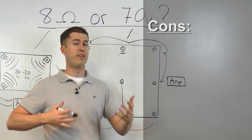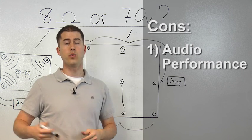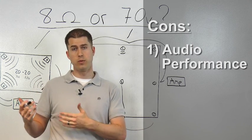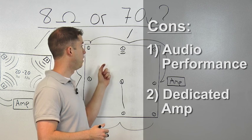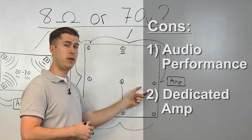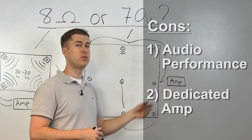Some of the disadvantages of 70-volt are, well, you don't get the full 20-20 range of sound, meaning you don't get the same audio performance as you would with an 8-ohm system, plus your choices are limited in powering your speakers, as a dedicated 70-volt amp is required.